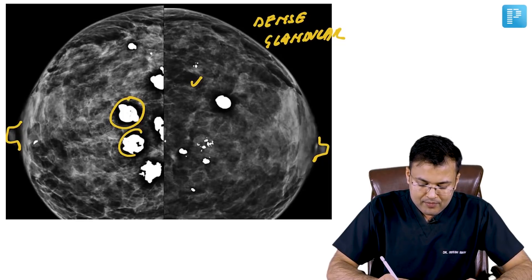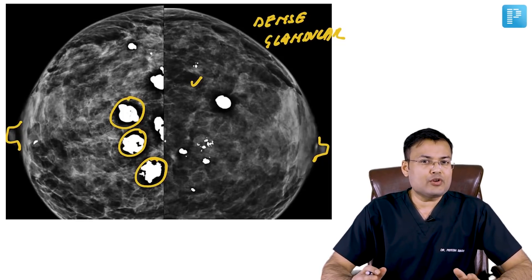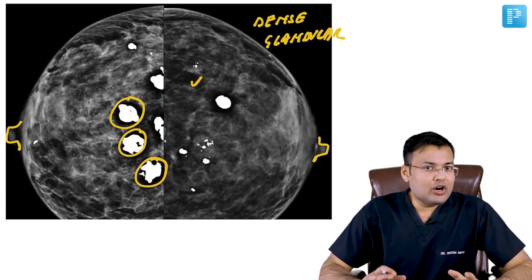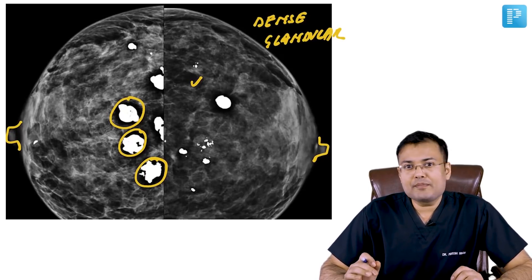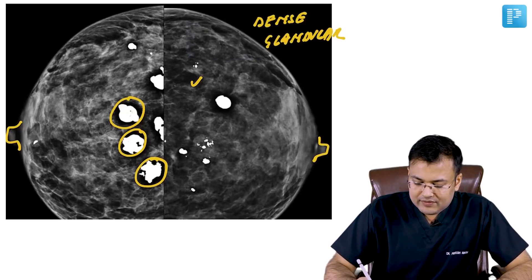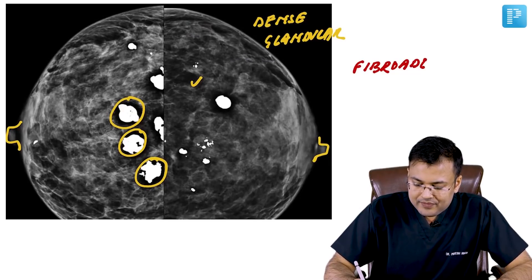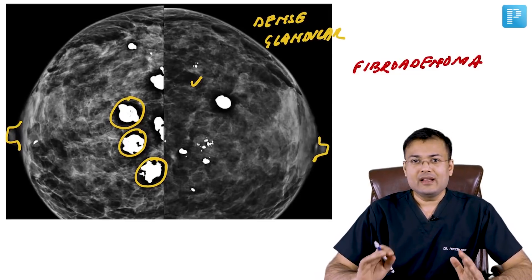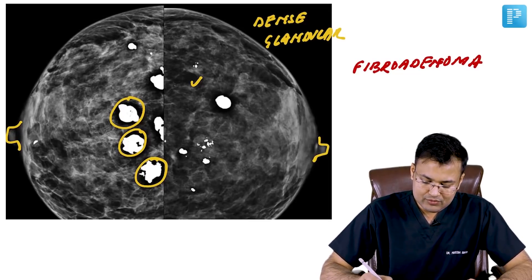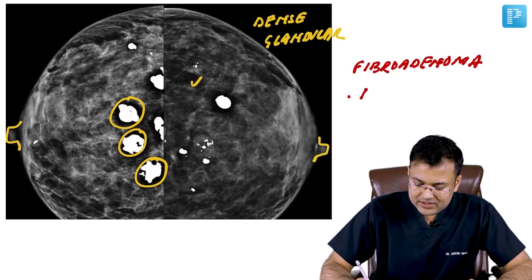Apart from a normal nipple, you can notice the presence of popcorn calcification — also called macro calcification. All these findings are suggestive of a benign etiology, and the diagnosis is fibroadenoma. Fibroadenoma is more common in young females, and the characteristic feature on mammography is popcorn calcification.